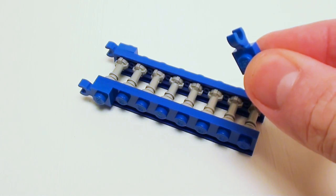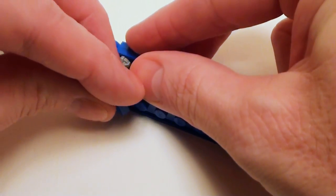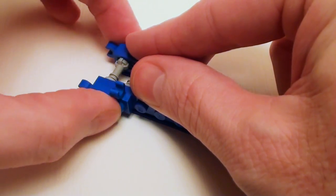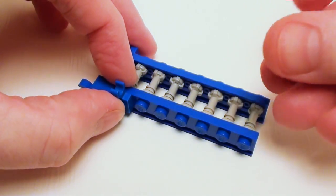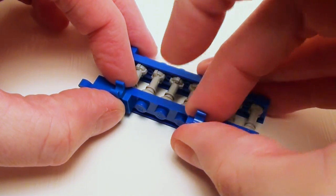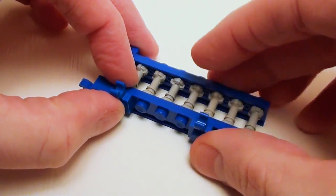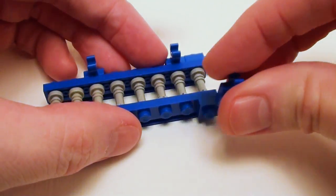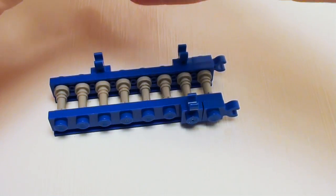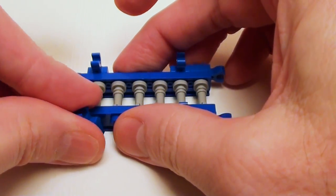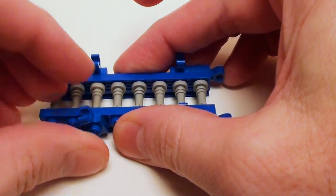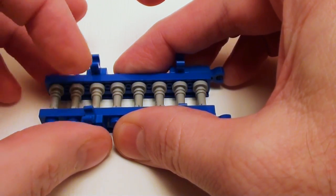And take several of these 1 by 1 plates with the horizontal holder. We'll place one right next to the previous. Now what I want to do is skip three studs, place this one right here. Same for the other side. Set these 1 by 1 plates with holder right here. Make sure these are all straightened up.